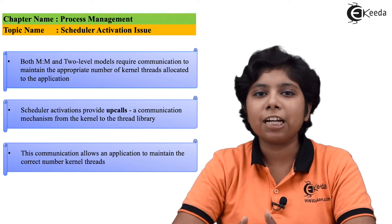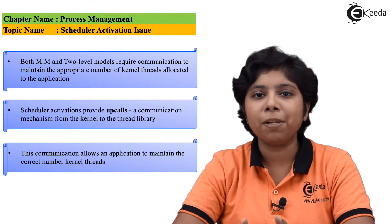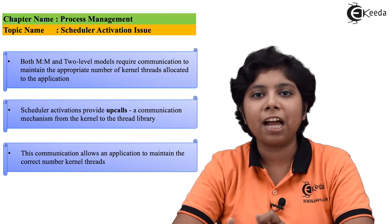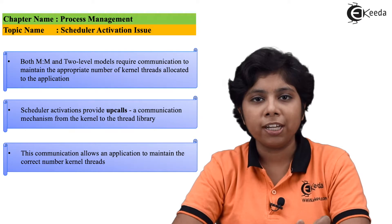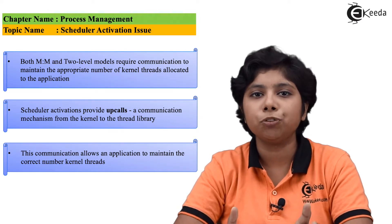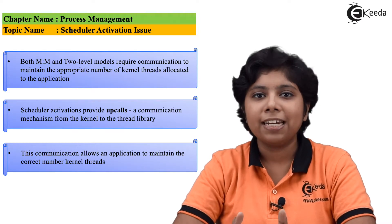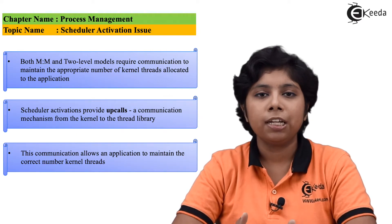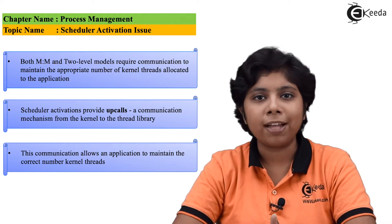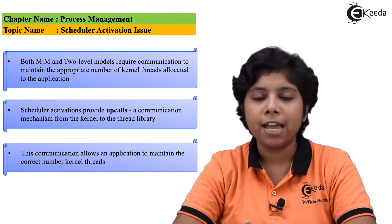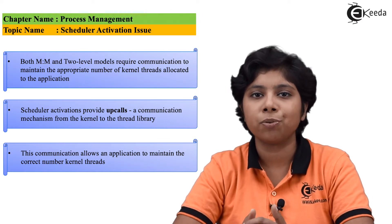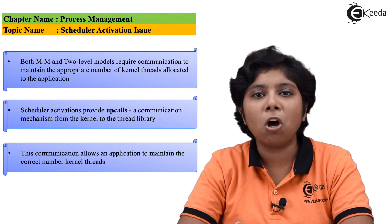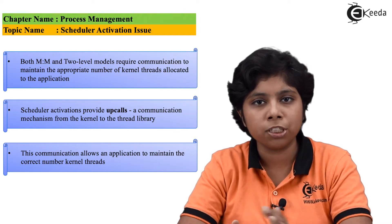One event that triggers an upcall is when an application thread is about to block. The kernel informs the application via an upcall that a thread will be blocked, and the application must allocate a new virtual processor with the help of an upcall handler. This new virtual processor is examined to see if it is free or available in the thread pool. If the virtual processor is free — being a lightweight process, it consumes very little memory — it can be assigned to any other process or thread in the application. The upcall handler then runs on the new virtual processor and saves the state of the blocking thread which was running on the previous virtual processor.